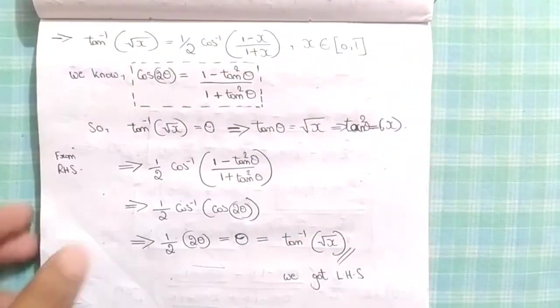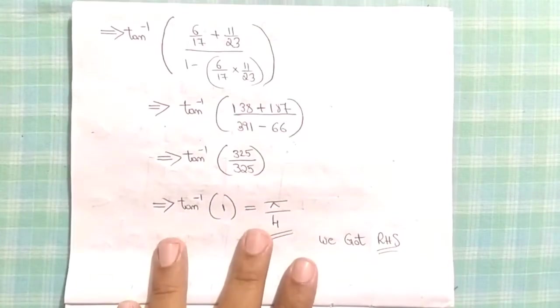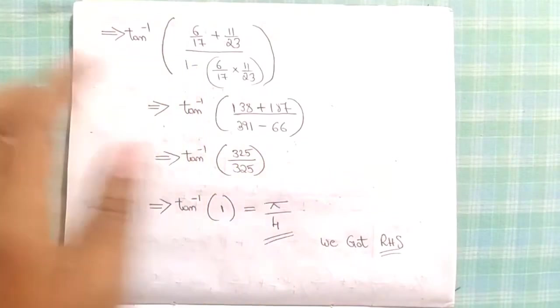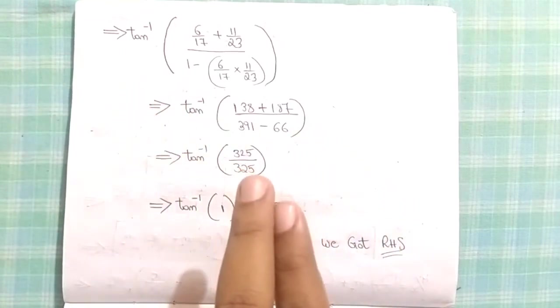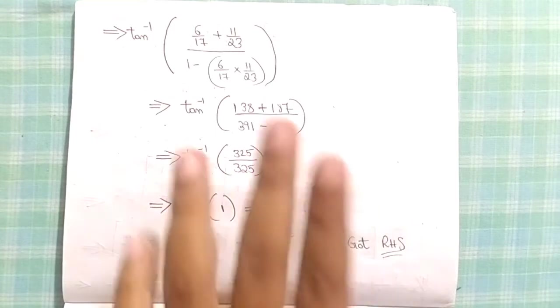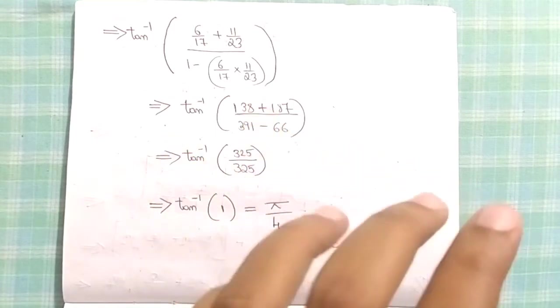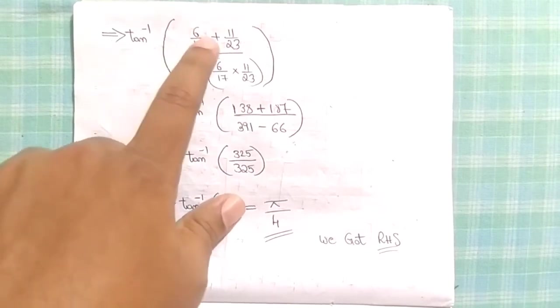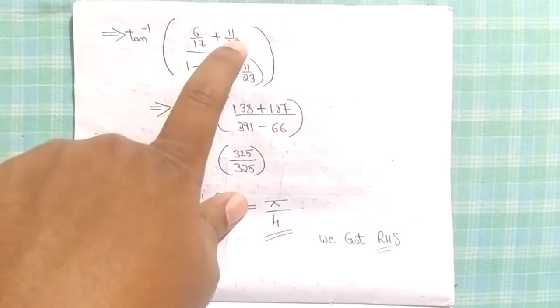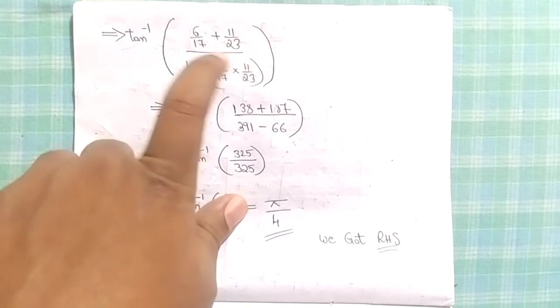Here is our problem: tan inverse of, you recognize the two groups. Now the two groups are again combined into one group with the formula tan inverse of x plus tan inverse of y. With that formula we have tan inverse of 6/17 plus 11/23 over 1 minus (6/17 into 11/23).